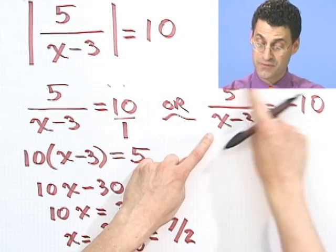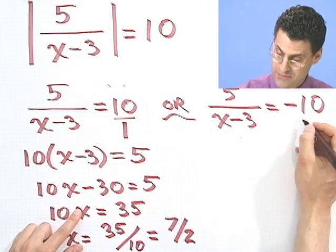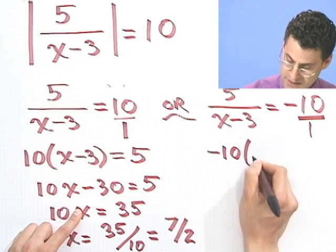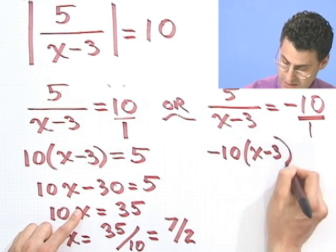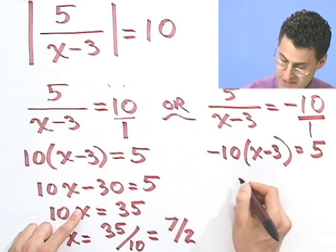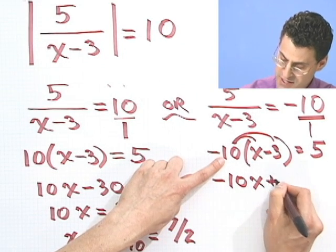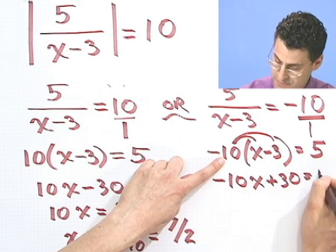And what's the other solution? Well, I have to solve this now. So I can cross-multiply again if you want, or multiply through again by x minus 3. And I would see minus 10 times x minus 3 equals 5. And so I'd see minus 10. I'm distributing now.